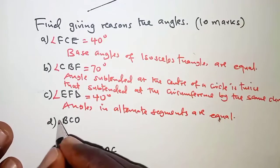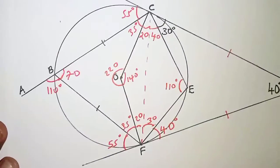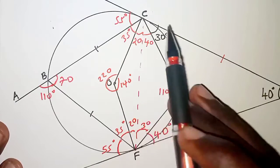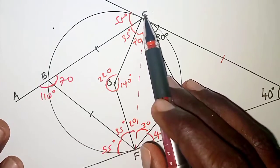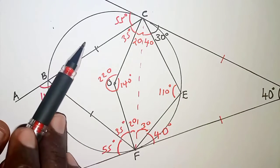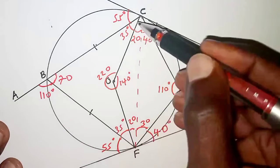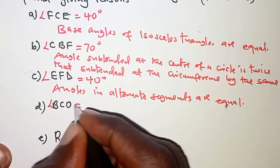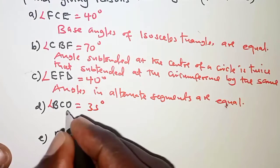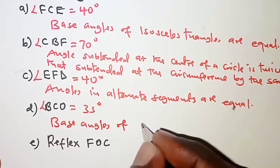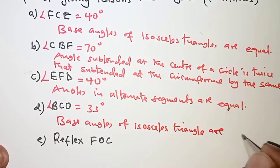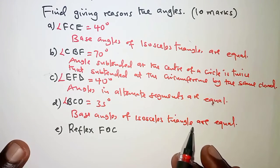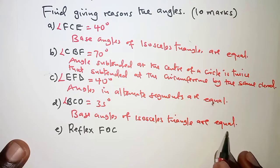Next, angle BCO. Angle BCO is 35 degrees. The base angles of triangle BCF are equal because BC equals BF, making it an isosceles triangle. The whole angle at C was 55 degrees, so the part BCO is 35 degrees. The reason is that base angles of an isosceles triangle are equal. Note: this statement must be complete — you must say they are equal, not just state 'base angles of isosceles triangle.'